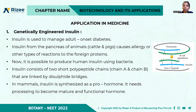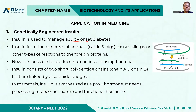What is the role of genetically engineered insulin? You know the use of insulin — it is used for managing diabetes. It is used to manage adult onset diabetes.